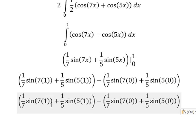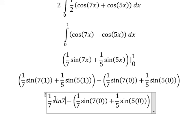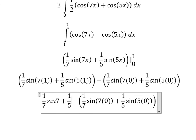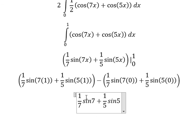So this one, you got about 1 over 7 sine of number 7 plus 1 over 5 sine of number 5. This one you got about 0, this one you got about 0. And this is the final answer. This is the end, thank you for watching.